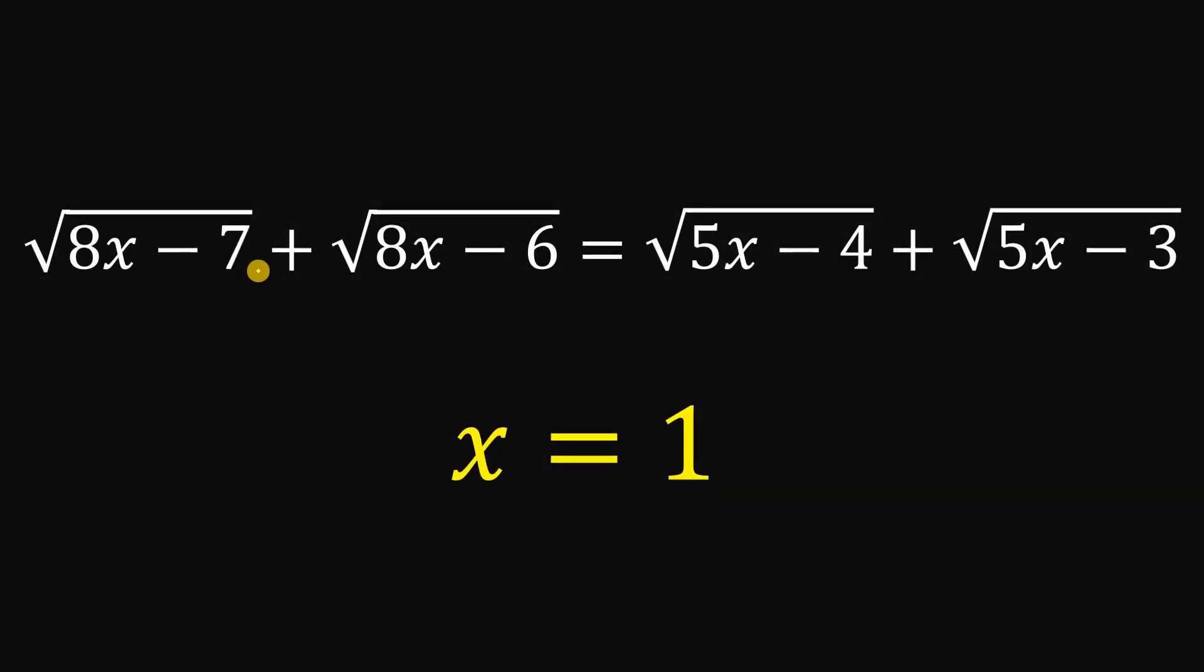Therefore, given this equation, square root of 8x minus 7 plus square root of 8x minus 6 equals square root of 5x minus 4 plus square root of 5x minus 3, then the value of x that satisfies this equation simply equals 1. And as always, we are done.